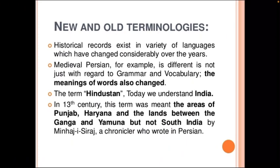There were some terminologies, and we are going to study about the new and old terminologies. Historical records exist in a variety of languages which have changed considerably over the years. Medieval Persian, for example, is different — not just with regard to grammar but also vocabulary, and the meaning of words has also changed. The term Hindustan, which today we understand as India, in the 13th century referred to the areas of Punjab, Haryana, and the lands between the Ganga and Yamuna — but not South India — according to Minhaj-i-Siraj, a chronicler who wrote in Persian.